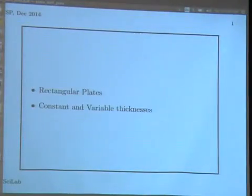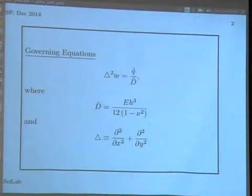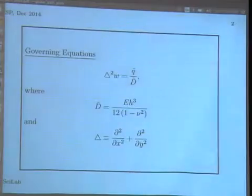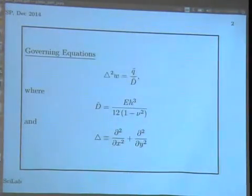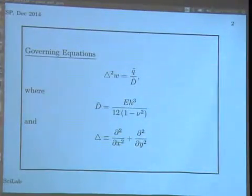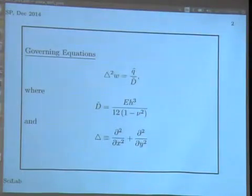We looked at deflection of plates as well as vibrations, though I have not given the results for vibration here. The governing equation for a plate of constant thickness involves the bi-harmonic operator: the bi-harmonic of W equals Q over D, where Q is the loading per unit area and D is the flexural rigidity given by E*H³/(12*(1-ν²)). E is Young's modulus, H is the thickness, and ν is the Poisson ratio. The Laplacian squared gives the bi-harmonic operator, and W is the deflection we wish to compute numerically.